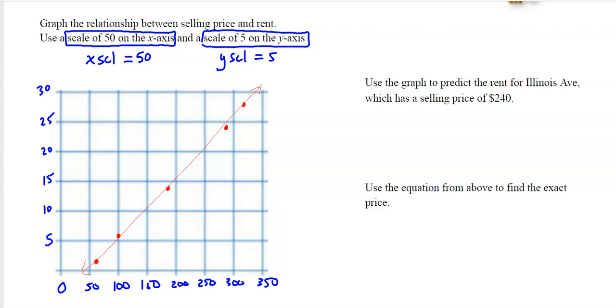Now, the two questions to the right says use the graph to predict the rent for Illinois, which was not in the chart, which has a selling price of 240. So a selling price of 240 would be right around in here. And I just go up. It looks like somewhere around 20. About $20. Now, it might be 19. It might be 21. I don't know. The big thing is the graph is just going to be an approximate. Looking at a graph is just kind of a guess, especially if it doesn't cross at one of these nice lattice points, like right on a corner somewhere. Those are called lattice points.